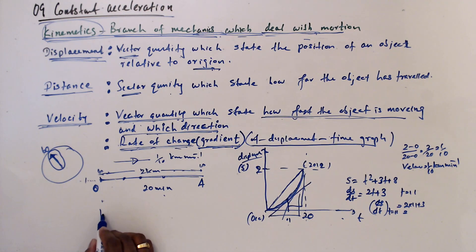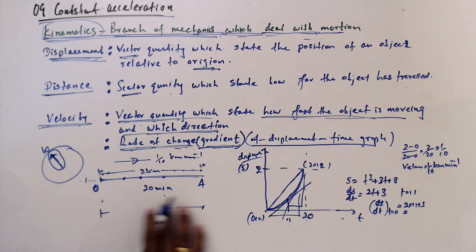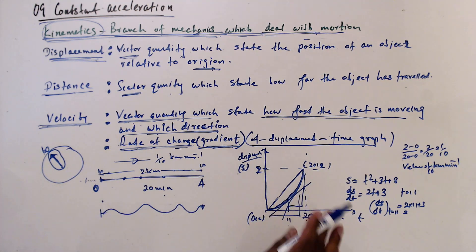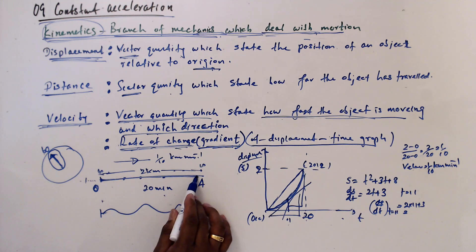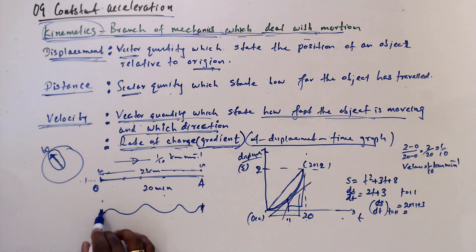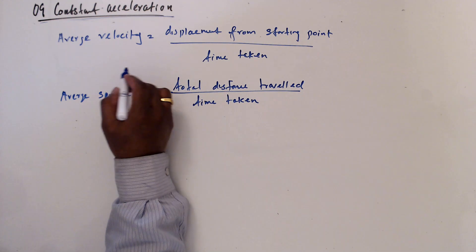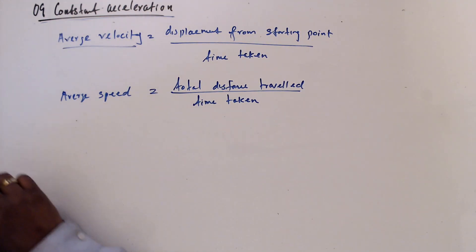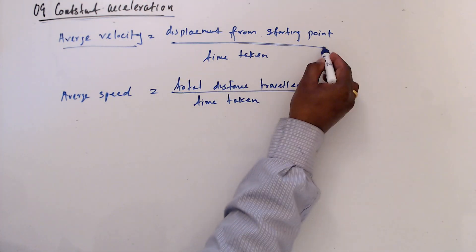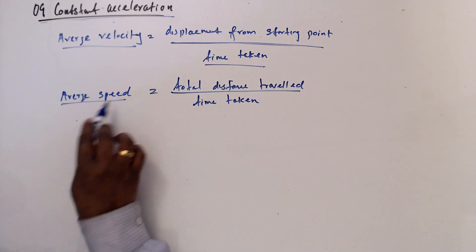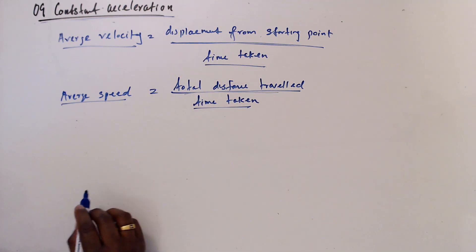For calculation purposes, we assume the road is a straight, closed line — we won't think about other complications. Average velocity is the displacement from the starting point divided by time taken. Average speed is the total distance divided by time taken.